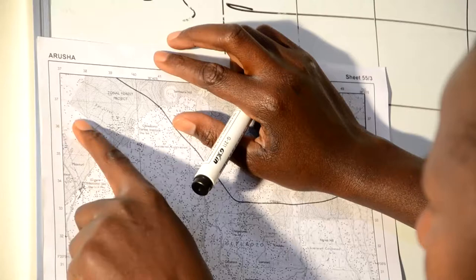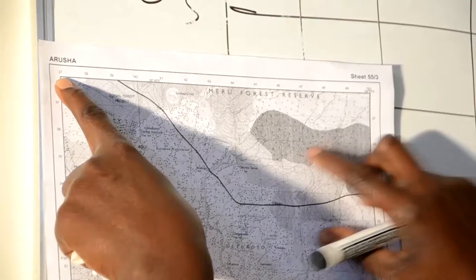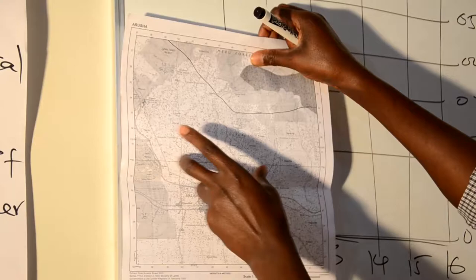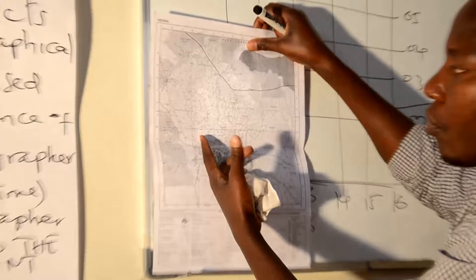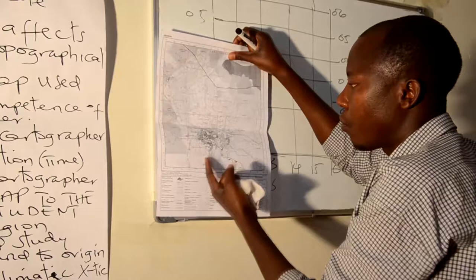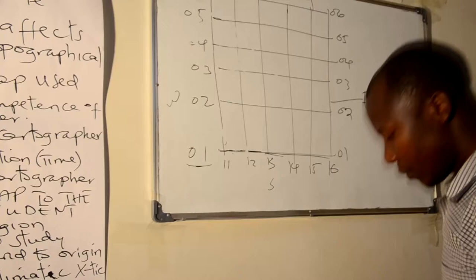Therefore, the grid reference is very essential. Apart from that, there is another component called Margin. Margin — this is the border. For instance, this map showing Kenya — there is a certain margin here, borders.